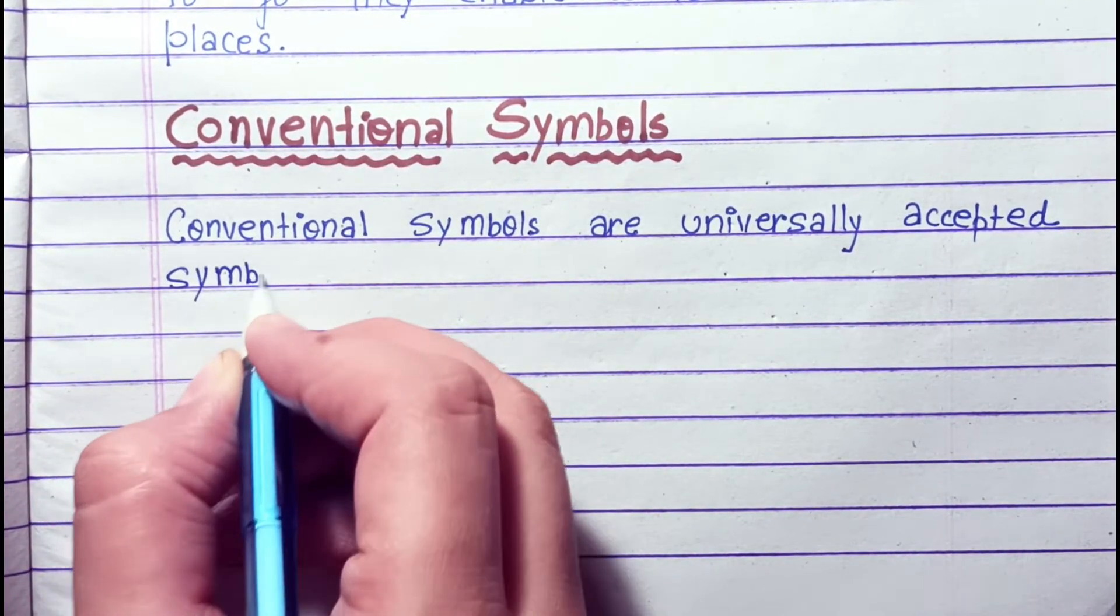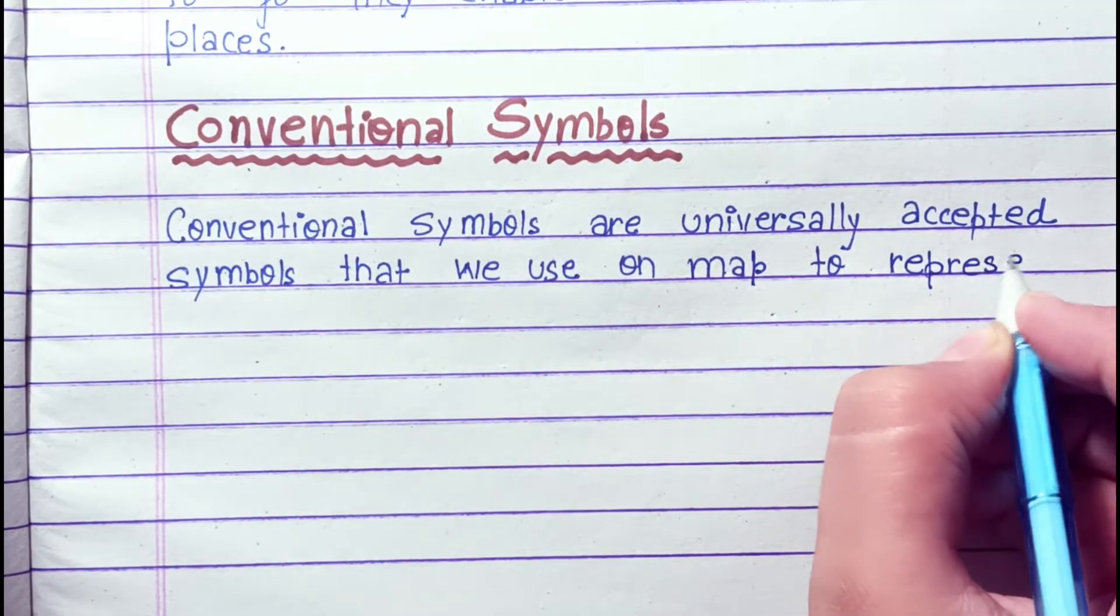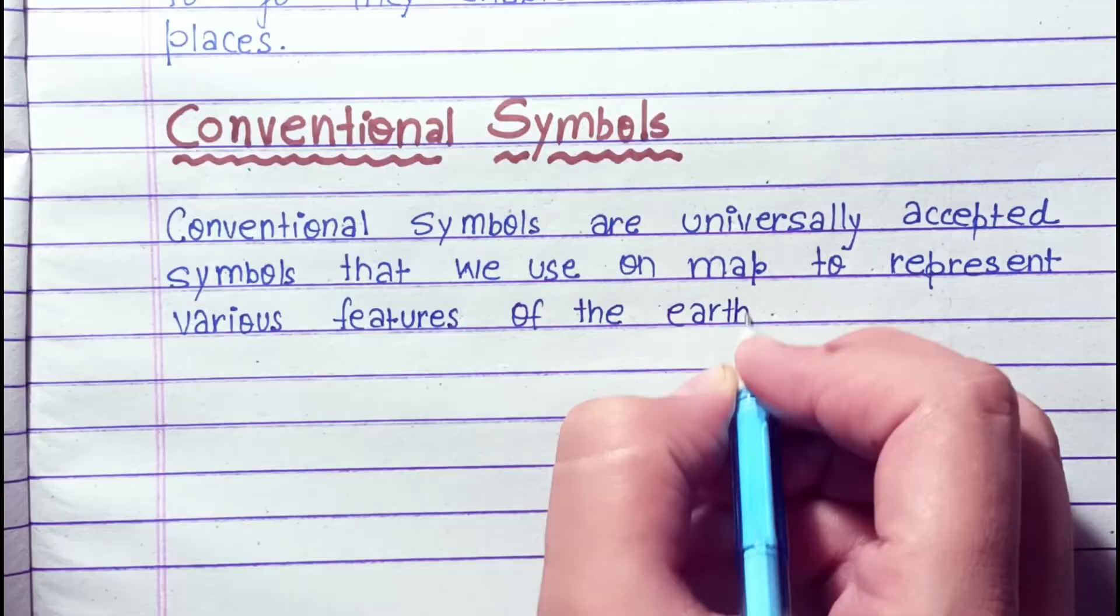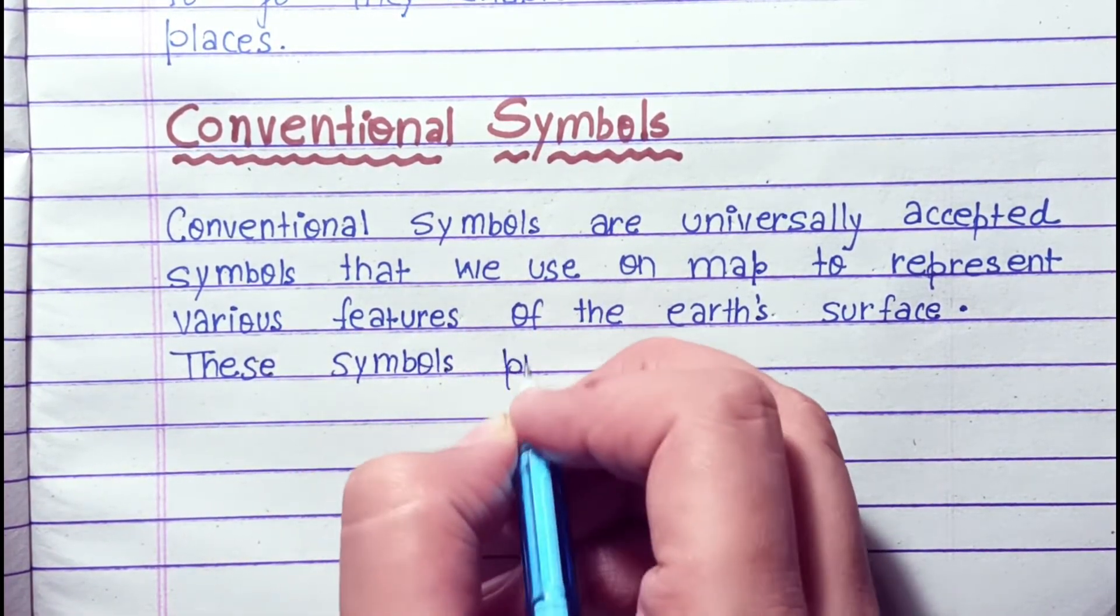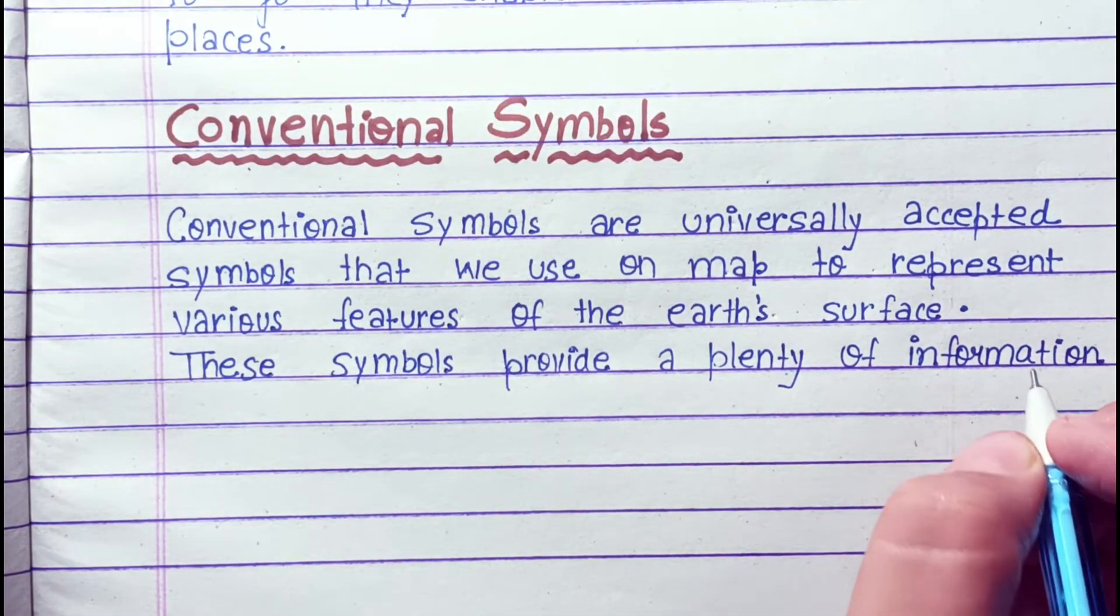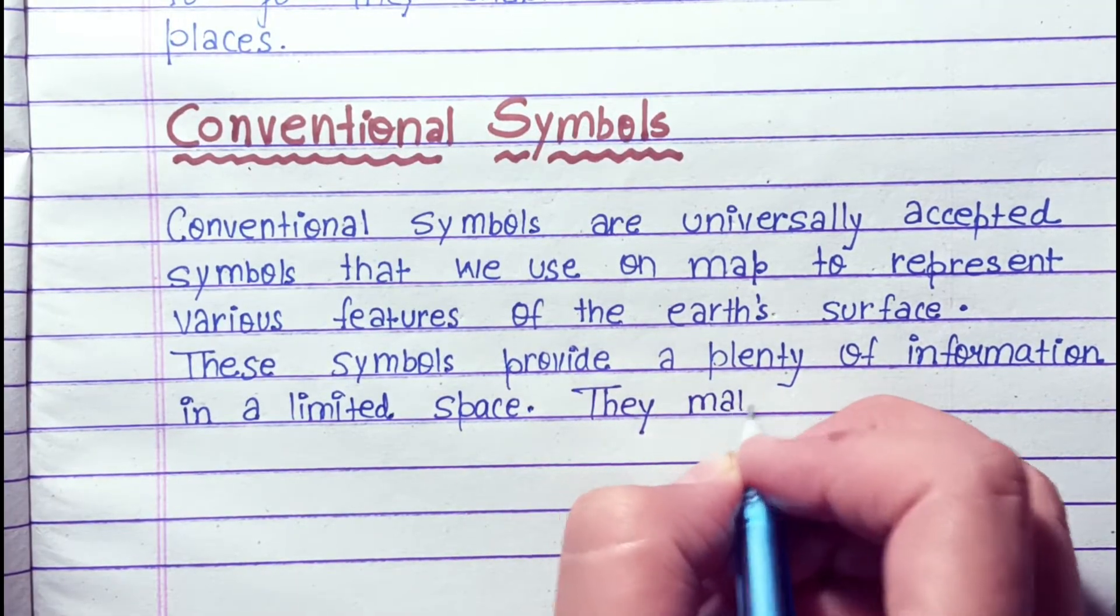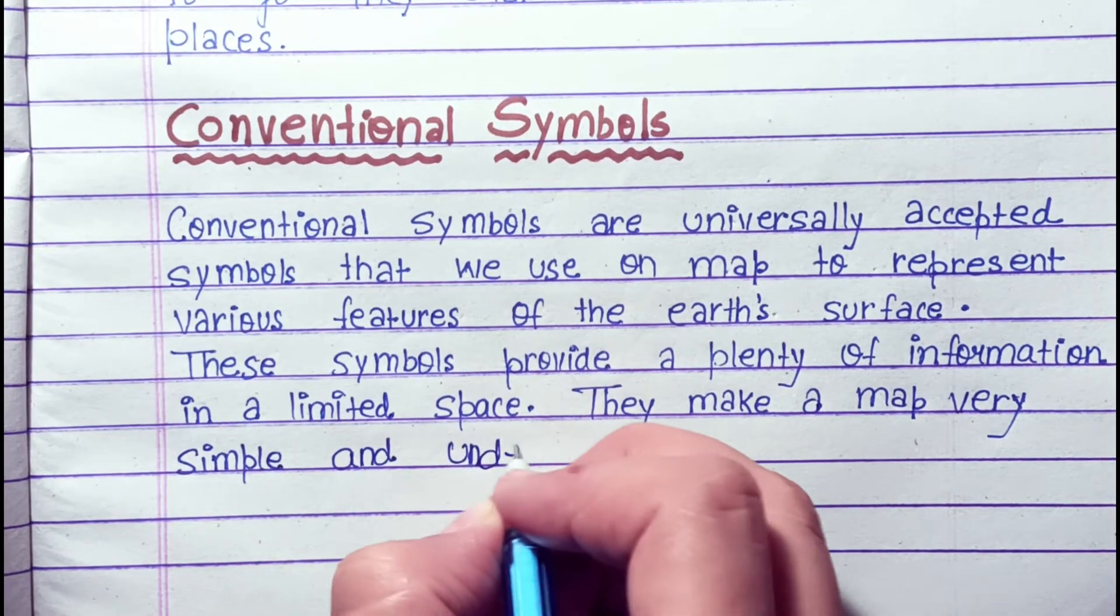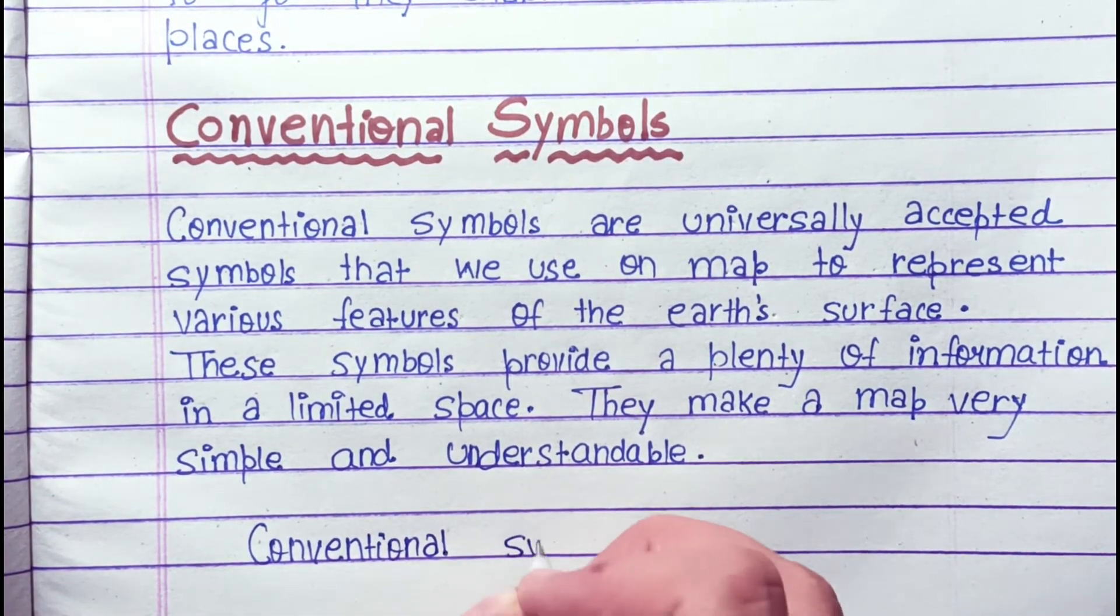Conventional symbols. Conventional symbols are universally accepted symbols that we use on maps to represent various features of the Earth's surface. These symbols provide plenty of information in a limited space. They make a map very simple and understandable.